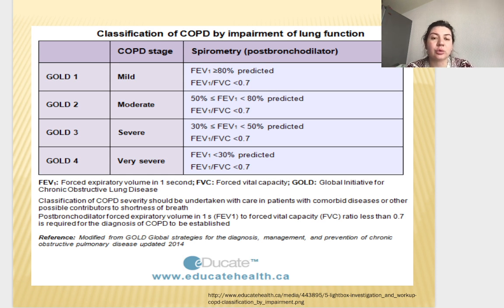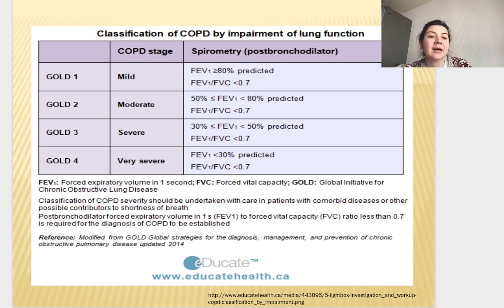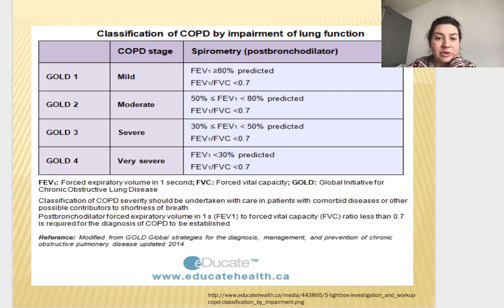According to spirometry indices we classify COPD using the GOLD classification. GOLD-1 (mild): spirometry nearly normal, FEV1 more than 80%, FEV1/FVC less than 0.7. GOLD-2 (moderate): FEV1 from 50% to 80%. GOLD-3 (severe): FEV1 from 30% to 50%. GOLD-4 (very severe): FEV1 less than 30%. For all stages, FEV1/FVC ratio is less than 0.7.